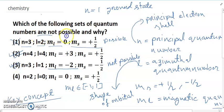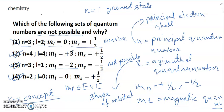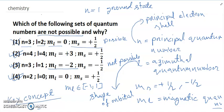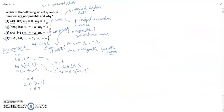Another option: l equals 0, ml equals 0, ms equals plus half. This is possible. Thanks for watching. I hope I gave some idea and you can understand my total lecture. Please check my total work.